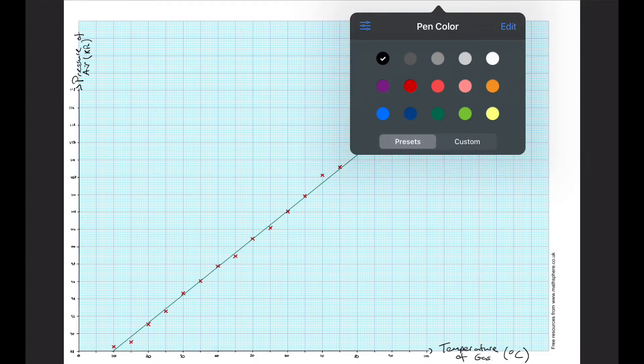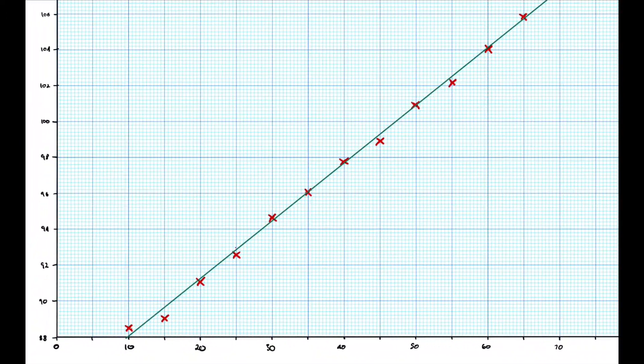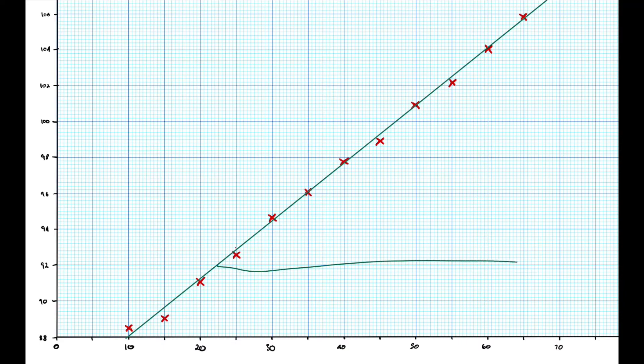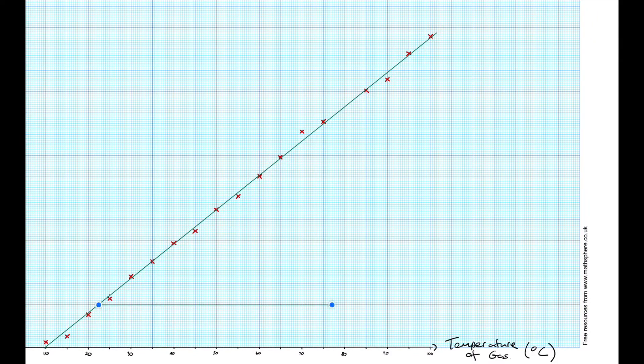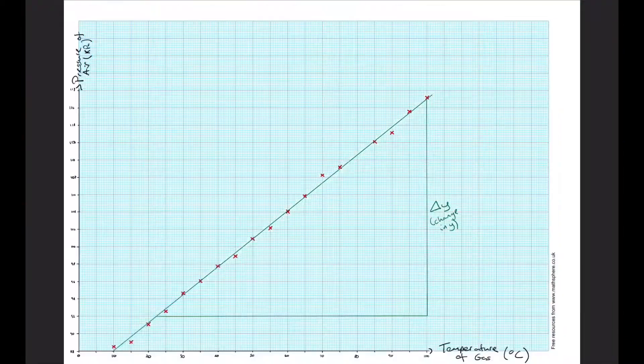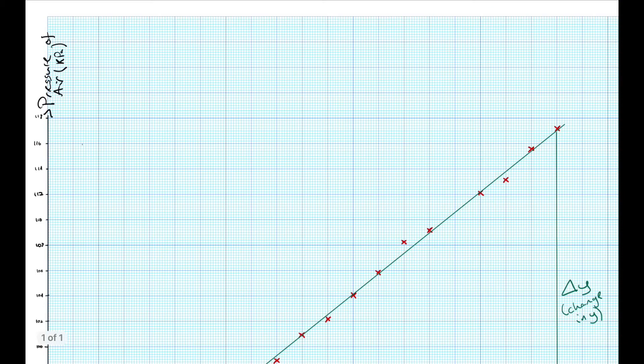In order to achieve this we need to ask ourselves the question: what is the temperature when the pressure is zero? Now the first thing we'll do to answer this question is find the gradient of the graph. It involves drawing a pretty large triangle from your line of best fit, horizontally and vertically, making a right angle. The vertical side of this triangle we call delta y, which is also known as change in y, and the horizontal part we call delta x, which means change in x. Finding the gradient involves dividing the change in y by the change in x.